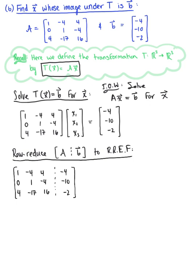Taking our first pivot position — the 1 in the top-left — we use it to eliminate the entry below it. We perform: (−4) times row 1 plus row 3, to get the new reduced row 3. This gives us the equivalent augmented matrix. Rows 1 and 2 remain as they are: (1, −4, 4 | −4) and (0, 1, −4 | −10). The new row 3 becomes: −4+4=0, 16−17=−1, −16+16=0, and 16−2=14.